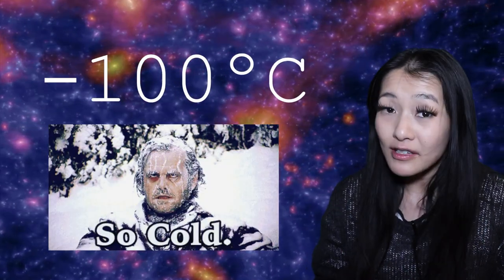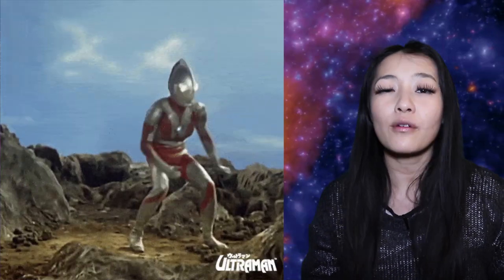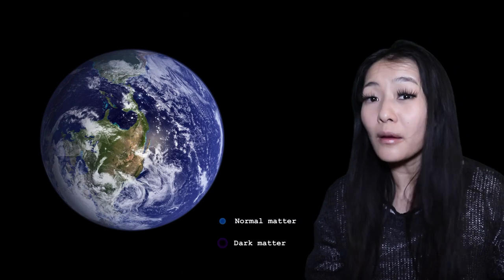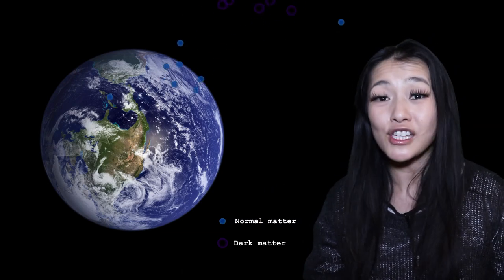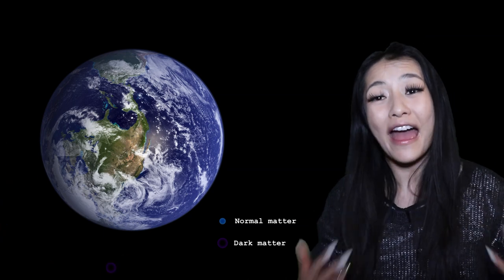Here, xenon is cooled to minus 100 degrees Celsius, and it's stored about 1500 meters below ground in an unused gold mine in South Dakota. This is to shield it from other particles that also bombard the earth, but not dark matter, which can still easily reach it because it's very weakly interacting. So it pretty much passes through everything.